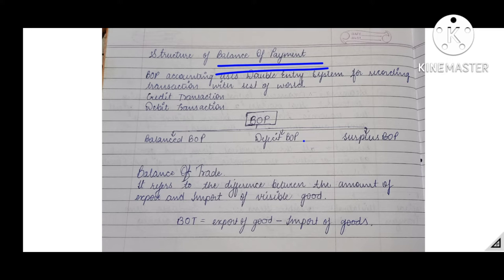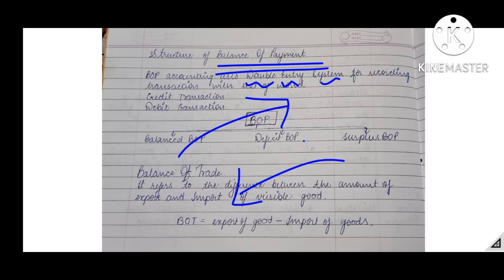Now let us talk about the structure of Balance of Payment. Since it is an accounting statement, it has to follow the principles of accounting. While making Balance of Payment, we use the double entry system, where every economical transaction has two faces or two effects — one is the inflow and the other is the outflow. In the Balance of Payment, we always include both sides of a transaction and show what effect it has.